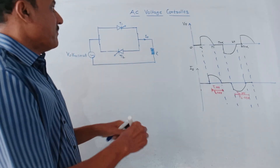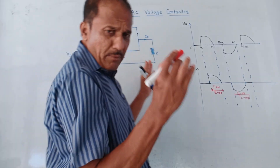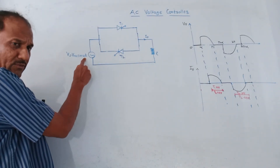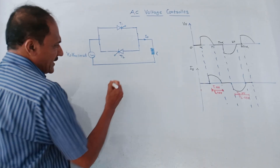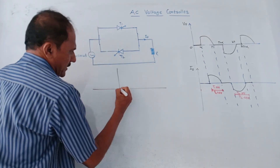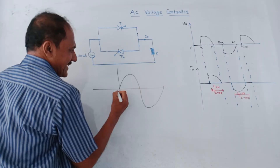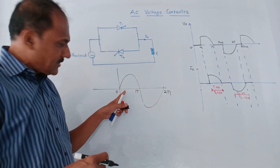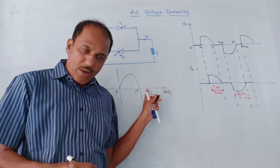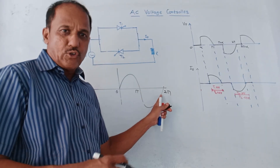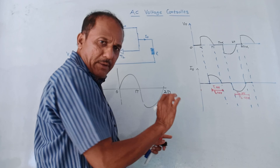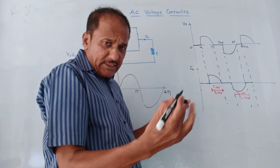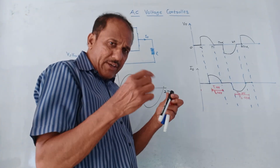The waveforms are straightforward. We are talking about a pure sine wave applied at the input. The sinusoidal waveform goes from 0 to π, then π to 2π. Zero to π represents the positive half cycle, and π to 2π represents the negative half cycle, then the cycle repeats.